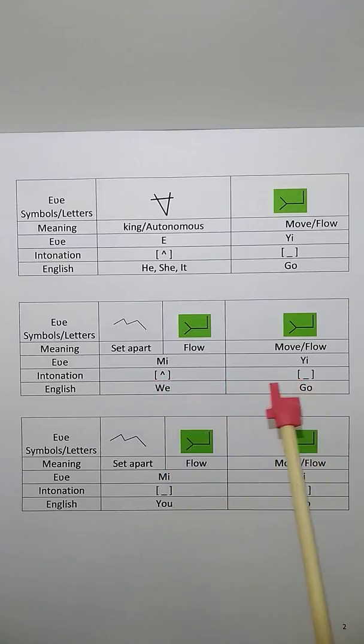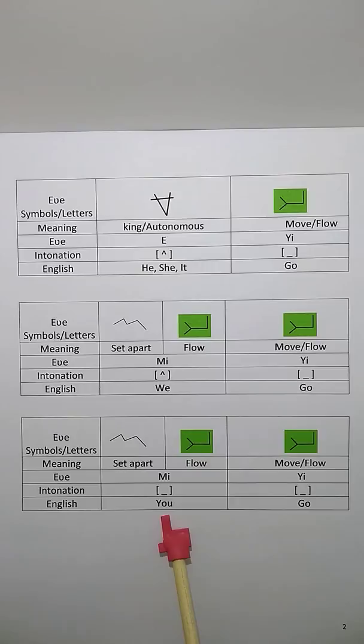And then you go, you say me ye. And then me, here also, is individuals flowing together. It's a plural. So you go, me ye.